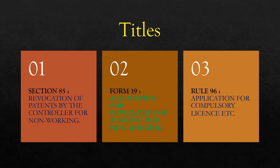Now we will go through the titles. Section number 85 has the title Revocation of Patents by the Controller for Non-Working. The title for form number 19 is Application for Revocation of a Patent for Non-Working. And rule number 96 has the title Application for Compulsory License, etc. When we read all three titles together, we can find the similarity.